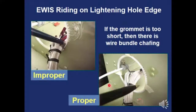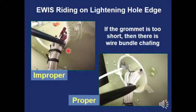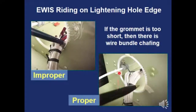Look at this picture: wires are routed through a lightning hole, sitting on the structure and not even on the grommet. The grommet doesn't have enough space to cover the entire hole. Make sure your grommets are the proper size and that the wires are not touching anything. Like the game Operation — you don't want the wires touching any of the sides.